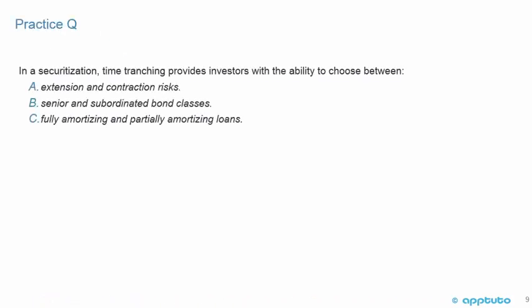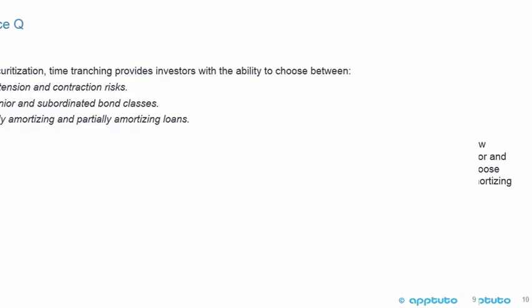Another practice question: In a securitization, time-tranching provides investors with the ability to choose between: A. extension and contraction risks; B. senior and subordinated bond classes; or C. fully amortizing and partially amortizing loans.